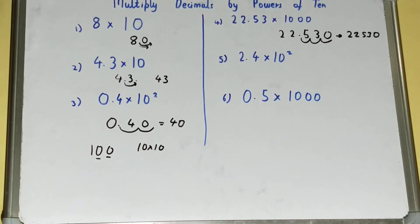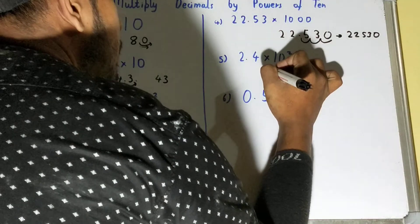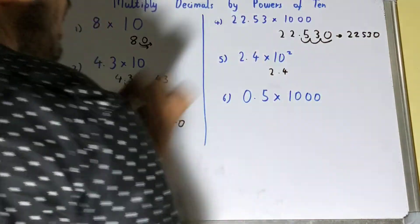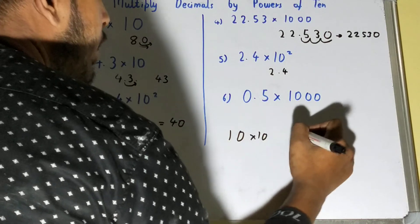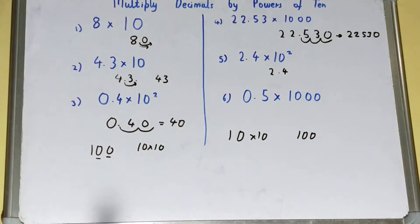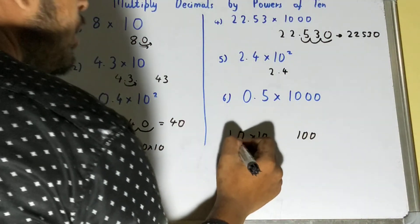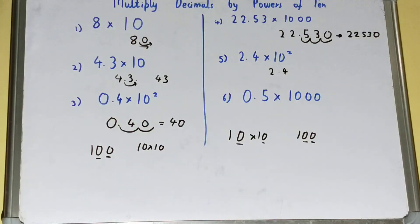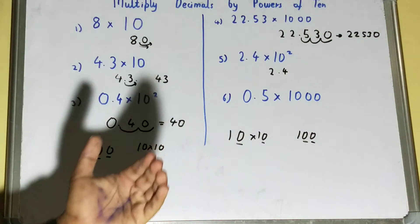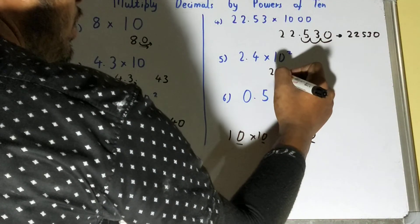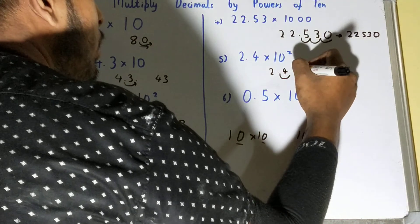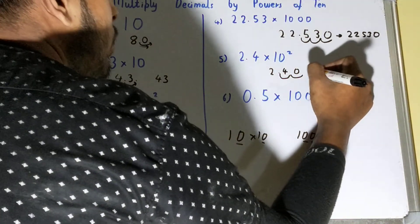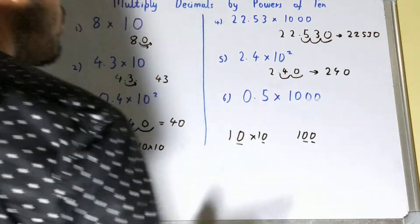Now let's see the next one: 2.4 × 10 raised to power 2. We write the number. If you have any doubt, 10 raised to power 2 is basically 10 × 10, or 100 — so we have two zeros. We move two decimal places to the right: for the first move we have the digit 4, for the second we don't have a digit so we put zero. We get the number 240.